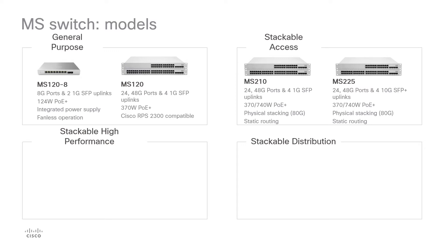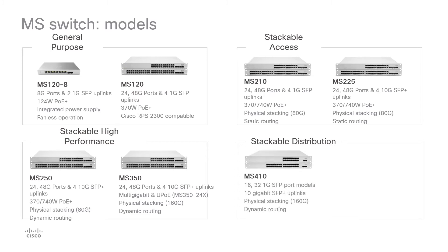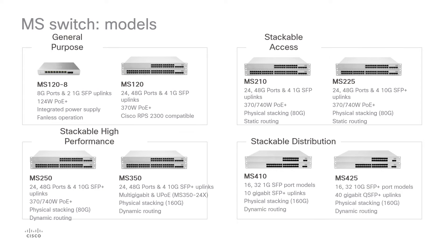The MS-250 and MS-350 can be considered high-performance stackable switches due to their ability to perform dynamic Layer 3 routing. The MS-250 is similar to the MS-350 except for differences in routing abilities and power supply configurations. The MS-410 is an SFP and SFP+ only switch with two dedicated stacking ports providing a total of 160 gigabits of stacking bandwidth. The MS-425 is SFP+ only, has two 40-gigabit QSFP+ uplinks, and supports flexible stacking.